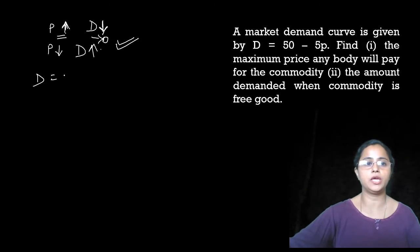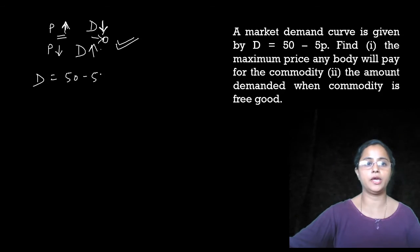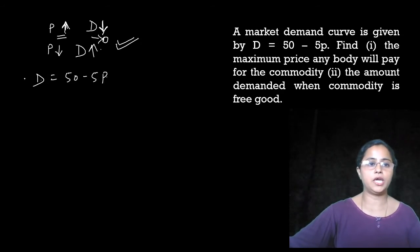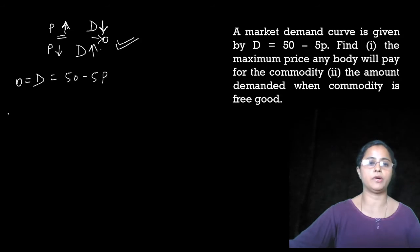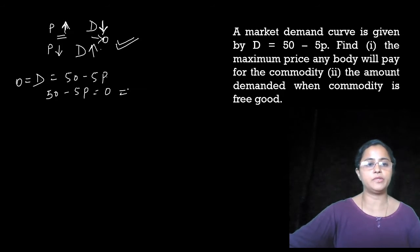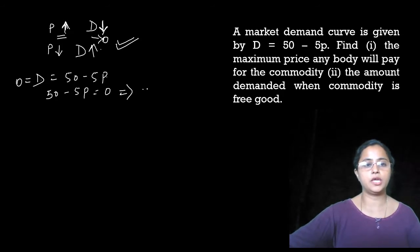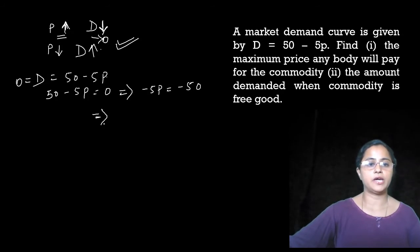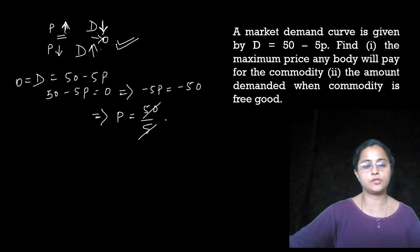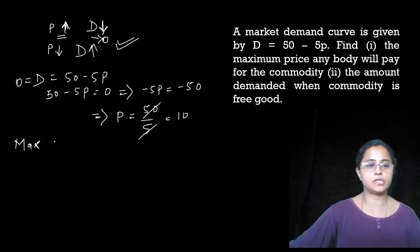We have the demand function. To find the maximum price, we set demand D equal to zero. So the equation becomes: 50 minus 5P equals 0. That means minus 5P equals minus 50, which implies P equals 50 divided by 5, equals 10. So the maximum price will be 10 rupees.